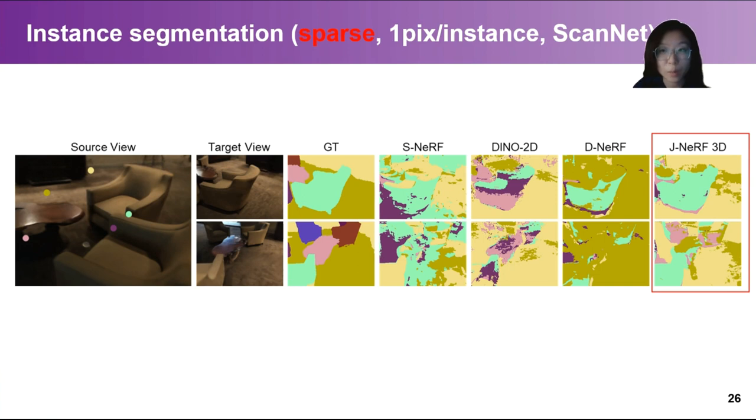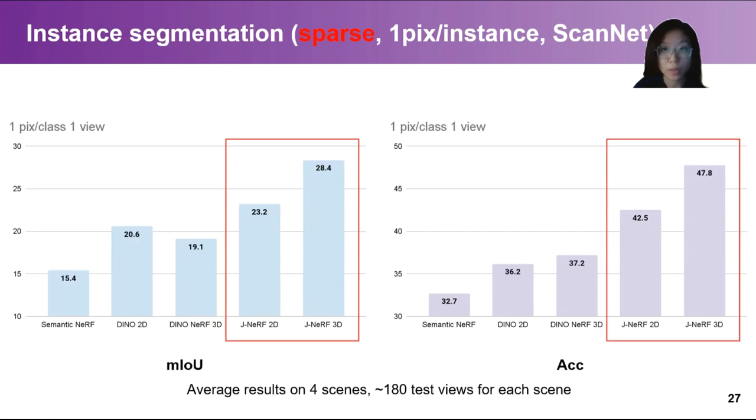We also experiment with instance segmentation label propagation. Under the sparse setting where only one pixel label is given for each instance from one view, as observed, Jacobi NERF can achieve smoother and finer label propagation results. Quantitative results also show that Jacobi NERF achieves better performance with relatively 48.7% higher mean IOU and 28.5% higher accuracy compared with Steiner NERF.